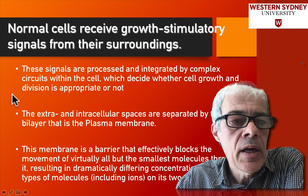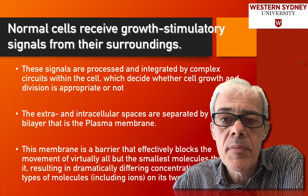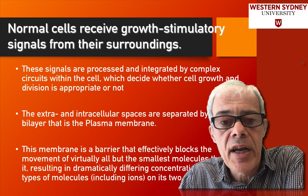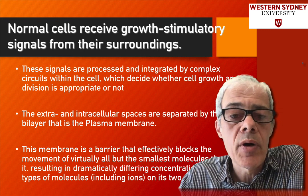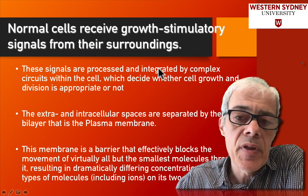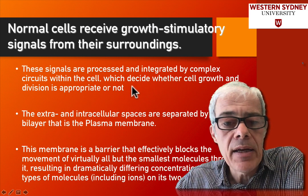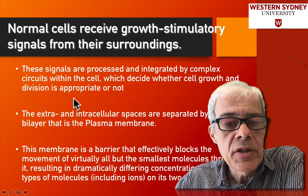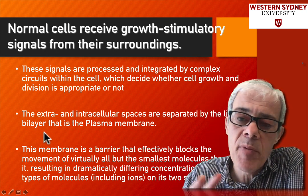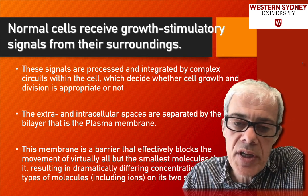In normal cell biology, cells receive signals from other cells or other sources, and these signals help regulate and trigger cells to grow at the right time. These signals are processed by internal cellular pathways. Cells have a plasma membrane, and embedded in the plasma membrane are these receptors. These receptors pick up the cell signals and drive the process of growth.